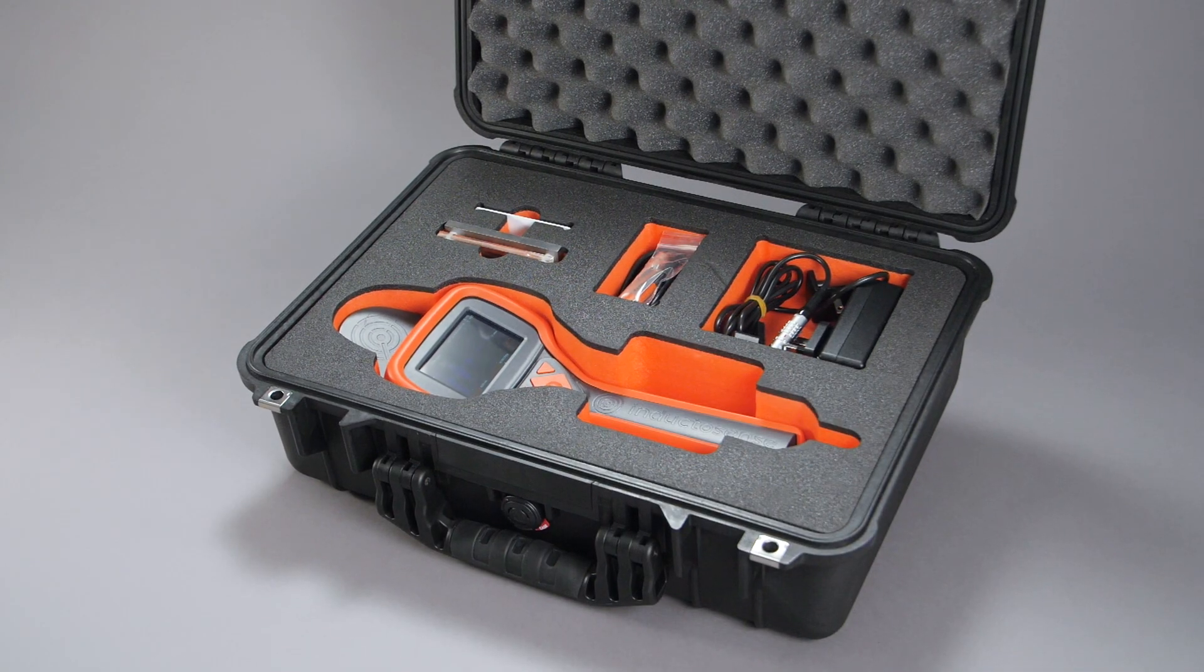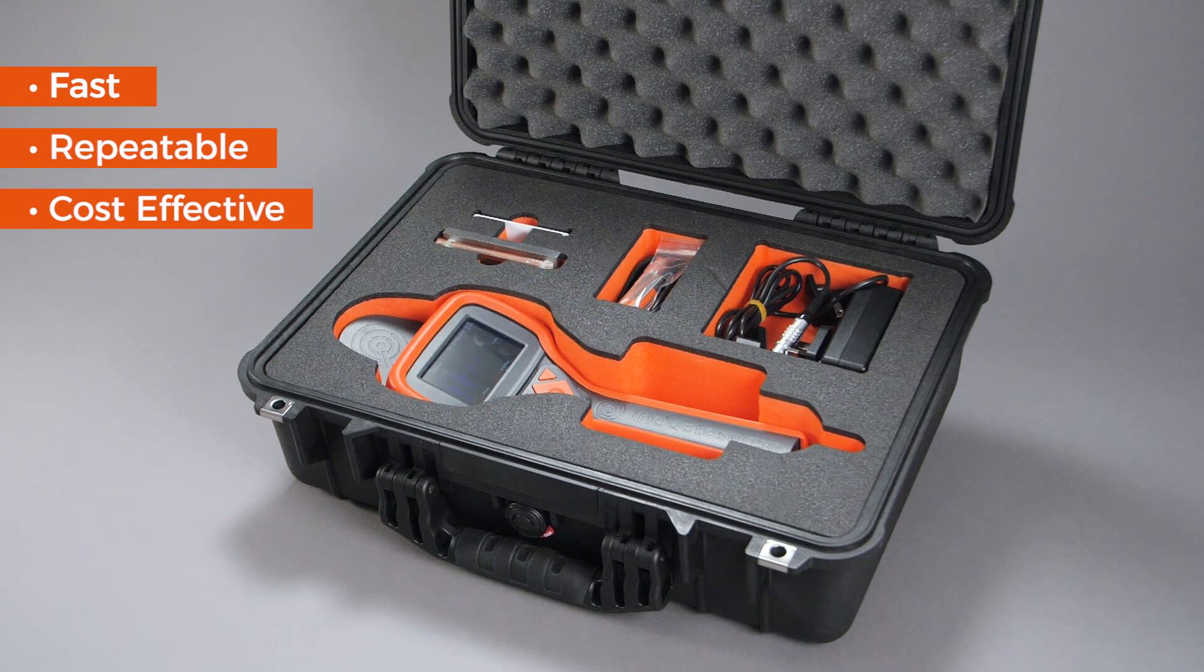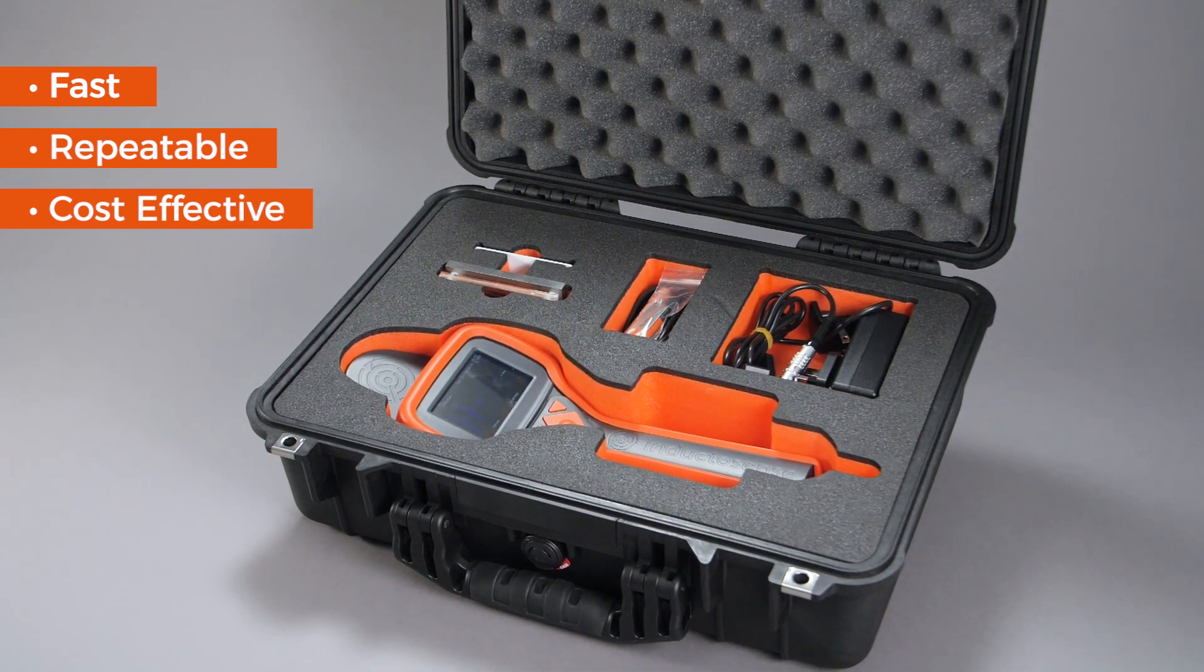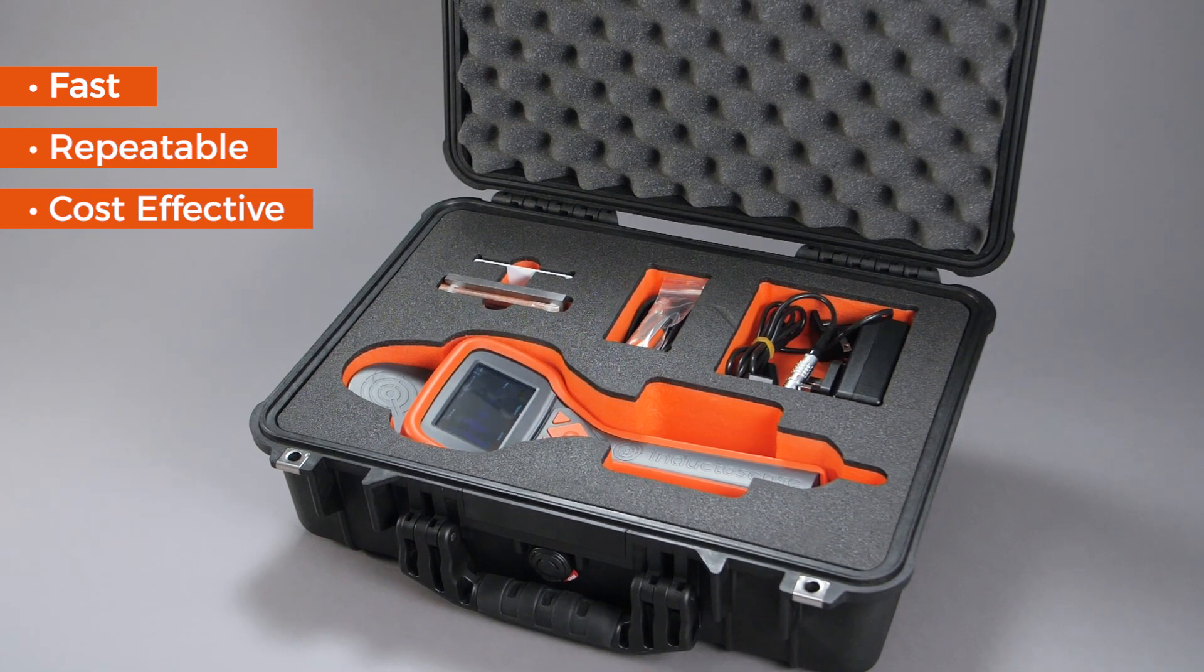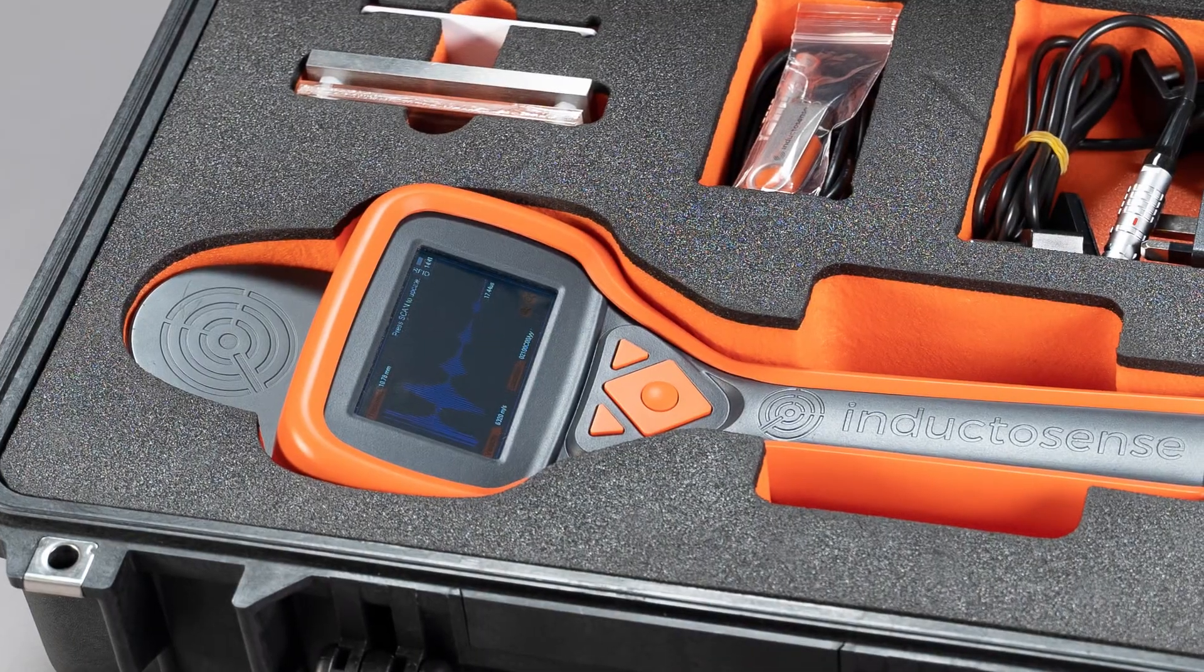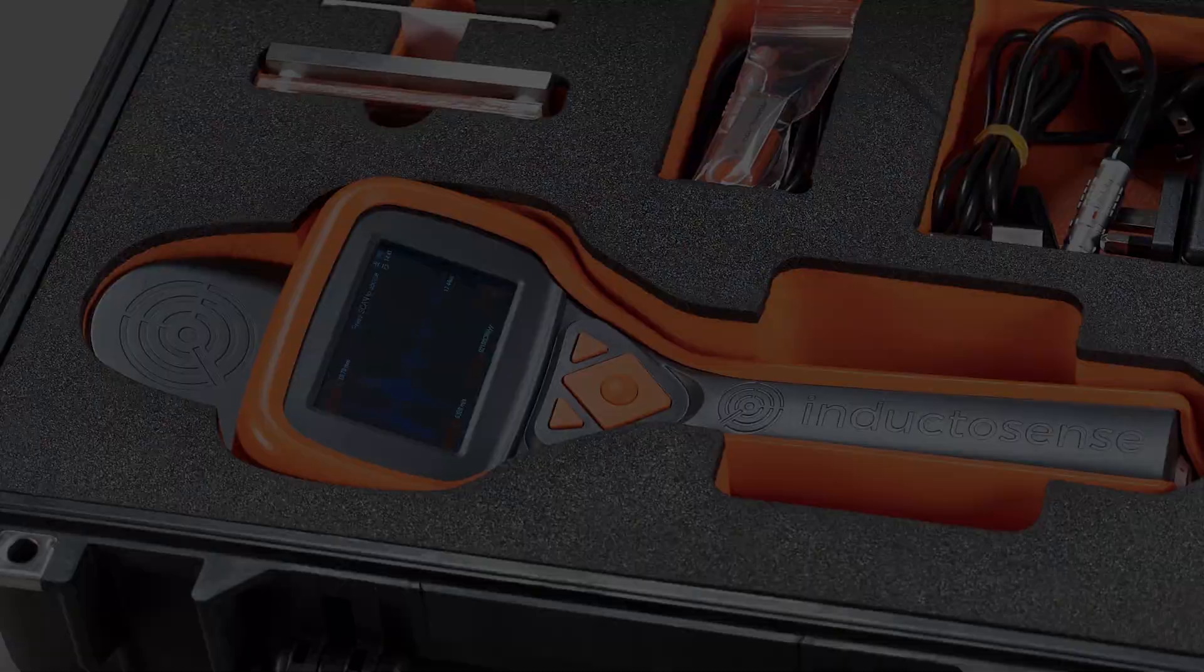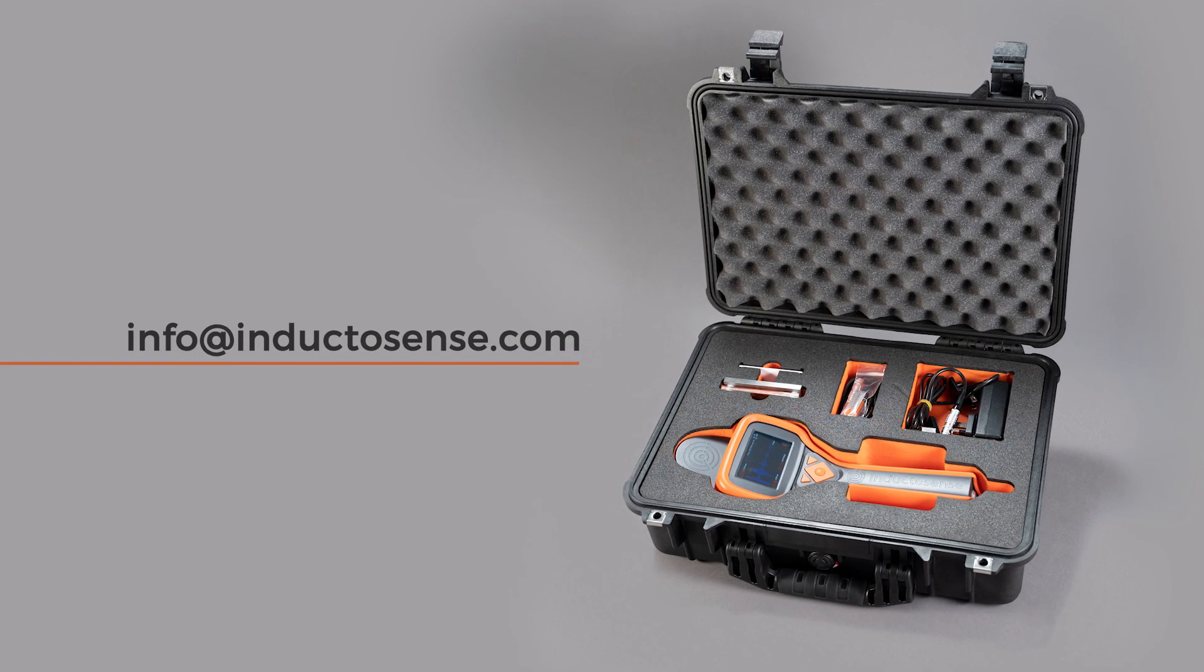The WAN system provides fast, repeatable ultrasonic thickness measurements from structures, saving the costs and time associated with conventional inspection methods. The solution is designed to remove human error and automate the flow of data to support timely and accurate decision making.